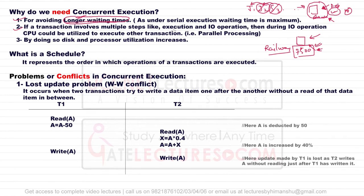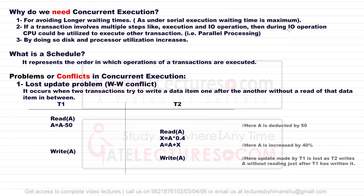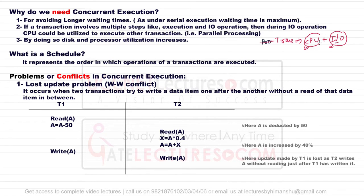The second reason is that a transaction involves multiple steps — execution, then I/O operation. During the I/O operation, the CPU could be utilized to execute another transaction. A transaction requires two types of operations: CPU operation, where the transaction performs some task inside the CPU, and I/O operation, where it performs input/output. When the transaction is doing I/O, the CPU is sitting idle and no task is being executed.